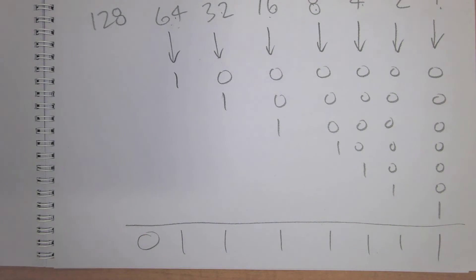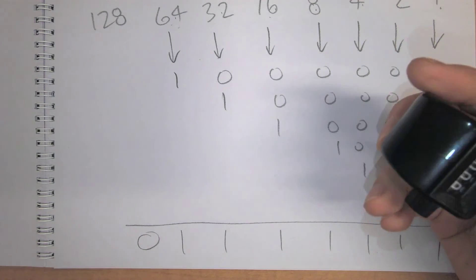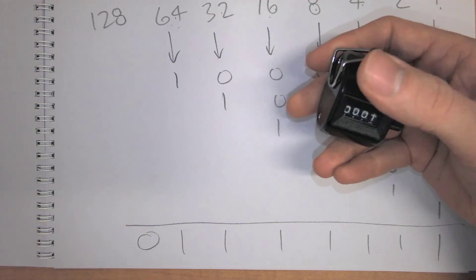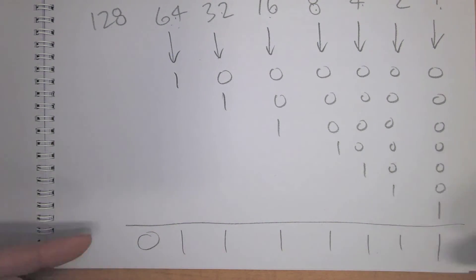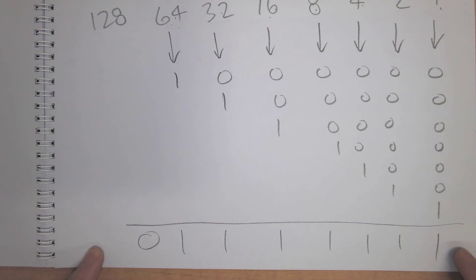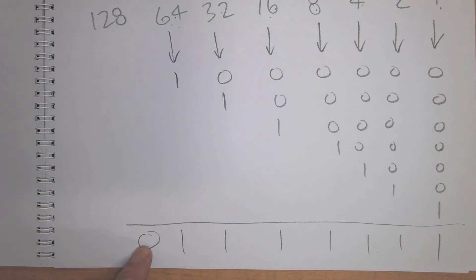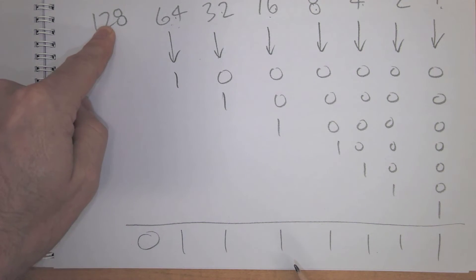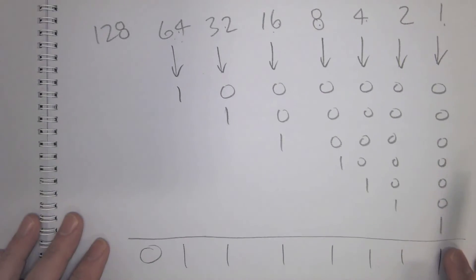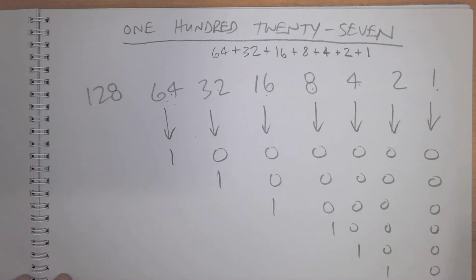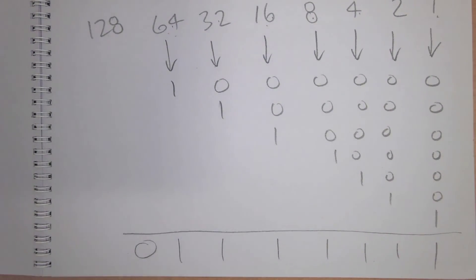As mentioned in a previous video about counting, when all of these bit positions are maxed out, the next number causes them all to become zero and the next higher bit advances to one. So we know that 128 in binary is just a 1 followed by all zeros — that is converting 127 to binary.